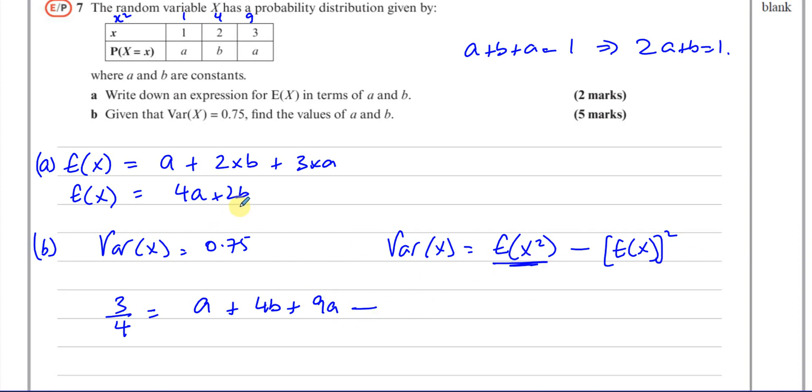Minus the square of the mean. Now, I could take this 4a plus 2b and I could square it. That's one option I can use. But what I'm going to do is use a shortcut, because I can see from my distribution that we have a symmetrical distribution. Now, when the distribution is symmetrical, like the values a, b, and a, these two are the same number. So when you have this symmetry, then the mean is always the middle number. So the mean is 2. So I know that the value of E(X) is definitely equal to 2. This is from the symmetry of the distribution.